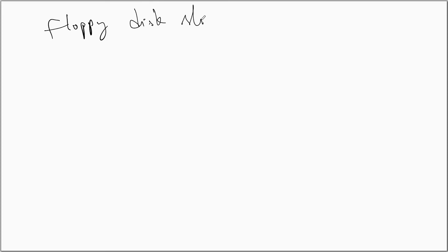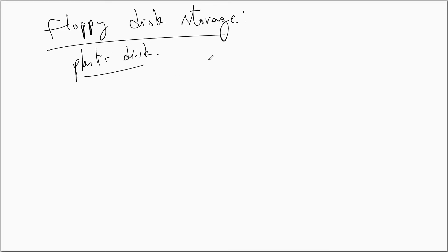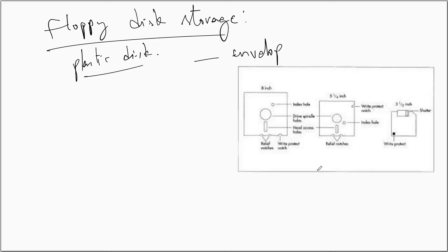Now we shall look at floppy disk storage. The floppy disk is a flexible plastic disk that comes in an envelope. Floppy disks come in different sizes: eight inch, five-and-a-quarter inch, and three-and-a-half inch. The disk has an index hole.